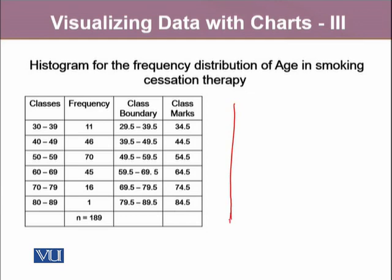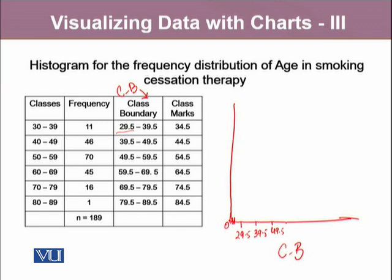For the construction of a histogram, on the x-axis we need class boundaries, denoted by CB. We start with the minimum class boundary, which is 29.5, and it goes on to 39.5, then 49.5. We want to make sure all these points are equidistant from each other. It continues to 69.5, and the last value is 79.5.